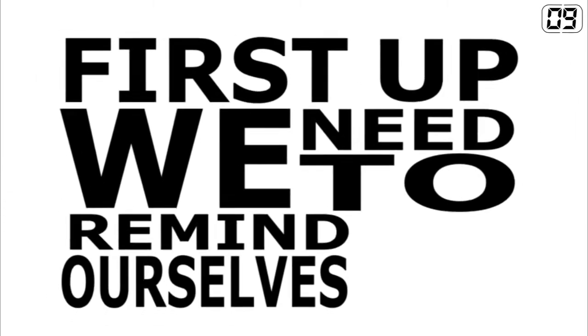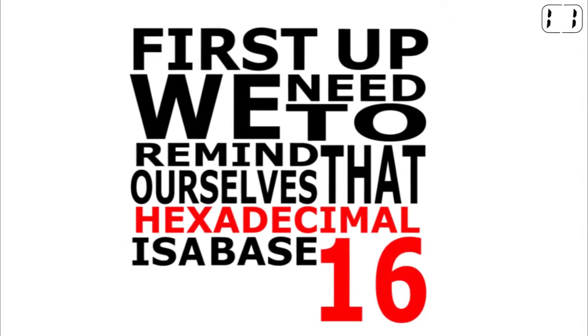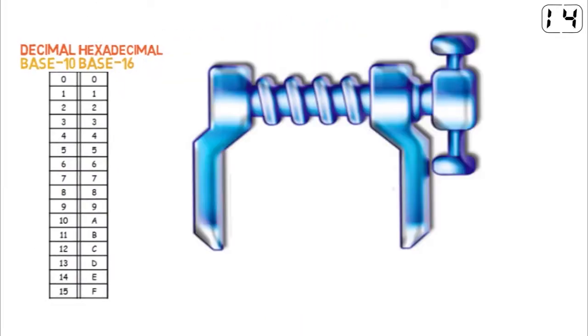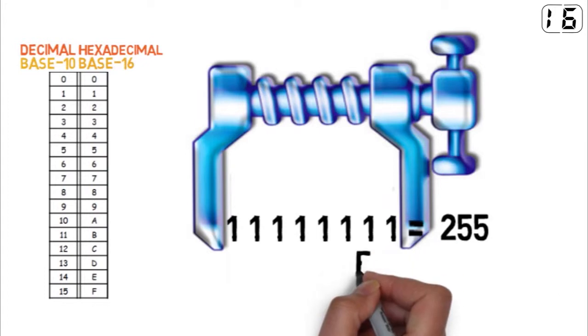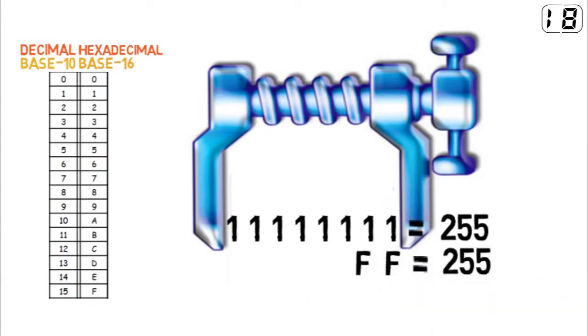First up, we need to remind ourselves that hexadecimal is a base 16 counting system. In hex we use 16 symbols, 0 to f. We use hex as a way of compressing binary numbers.